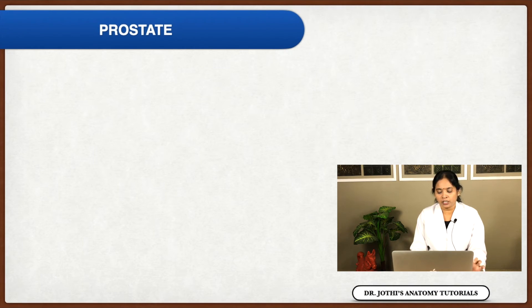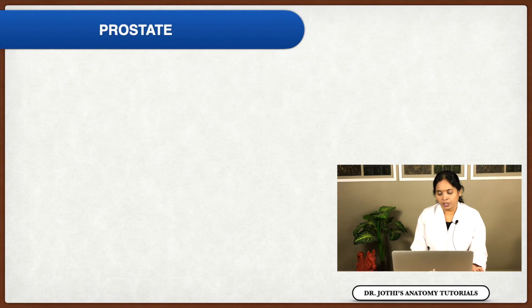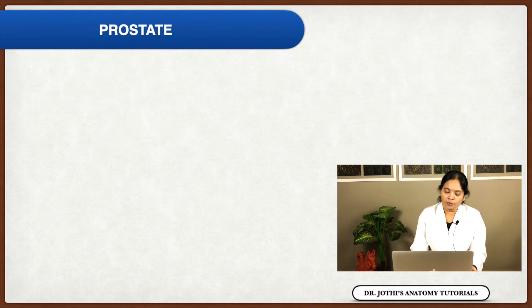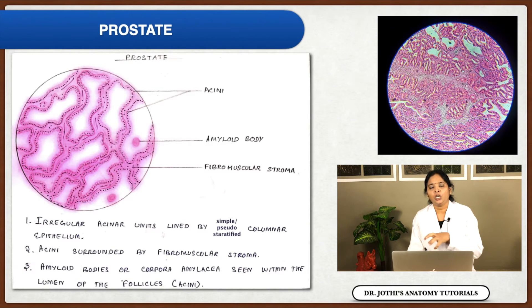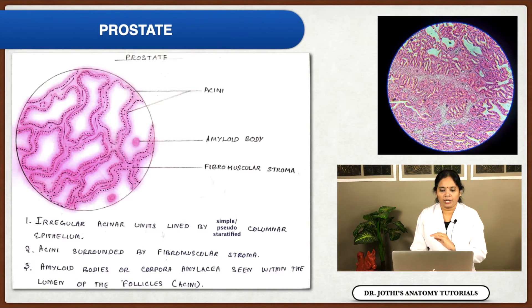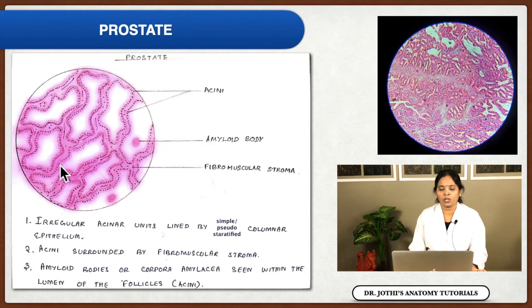The next structure is the prostate. It is also an accessory sexual gland, but it is the largest one compared to the seminal vesicle — it is the largest accessory sexual organ of the male reproductive system. As a gland, it is lined by a capsule. The stroma is made up of fibromuscular stroma, consisting of smooth muscle fibers along with collagen and elastic fibers.